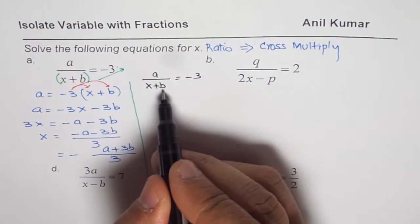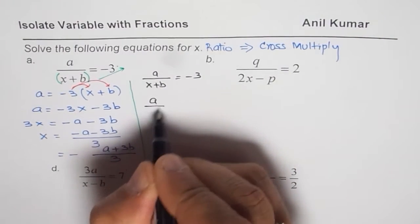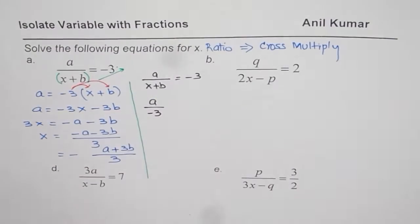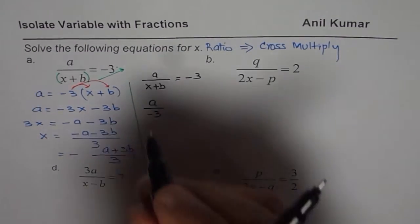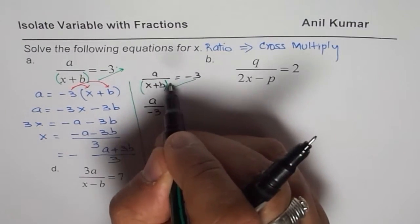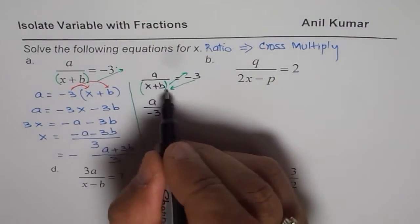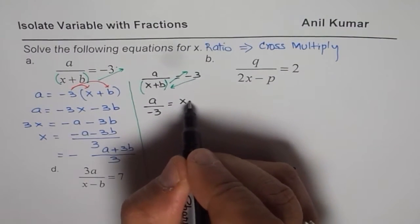When I am cross multiplying, I will write minus 3 in the denominator. So I can write this as a divided by minus 3. Do you see the point? So this is cross multiplication. I brought this here, and I will bring x plus b to the numerator. So I could write this as equals x plus b.